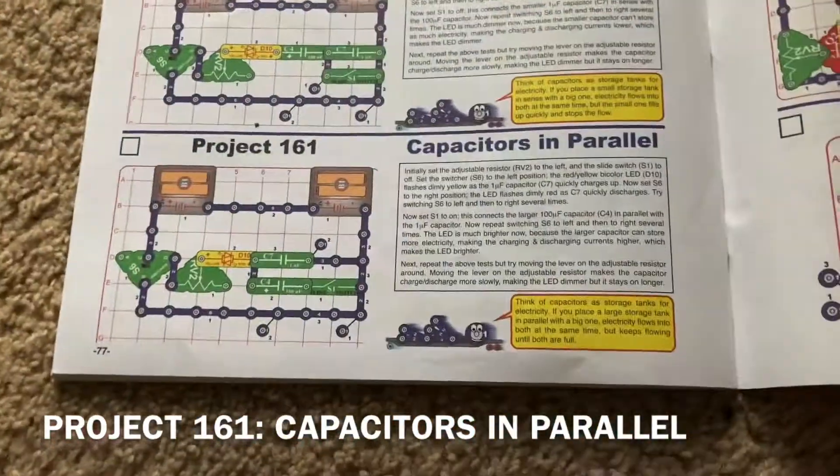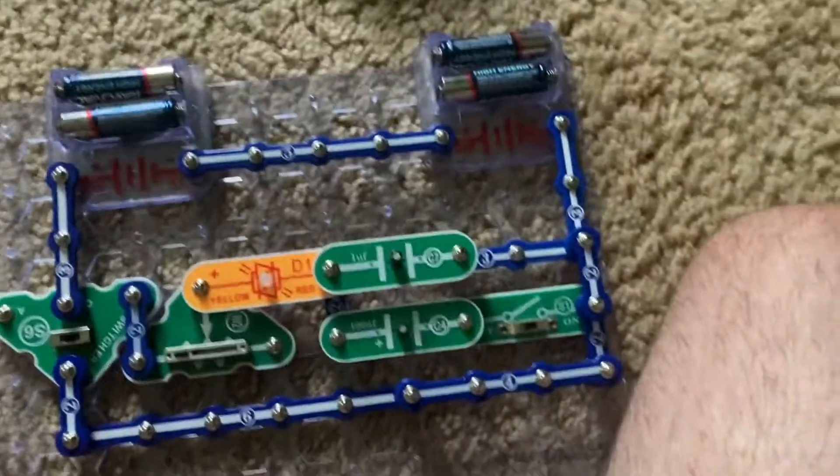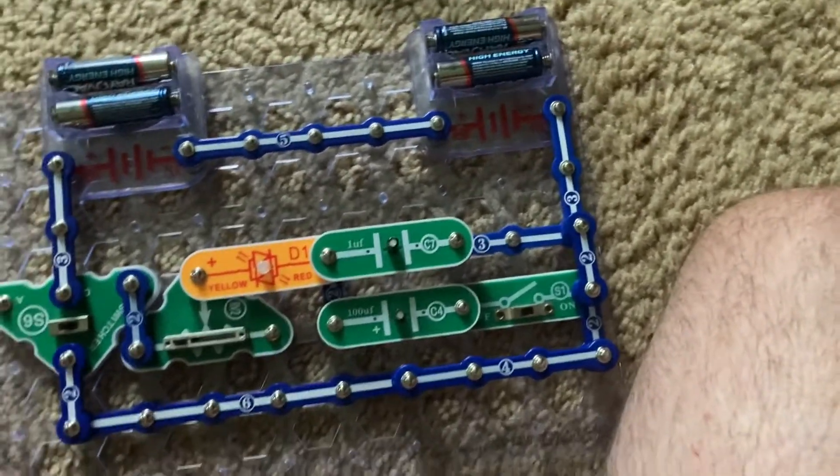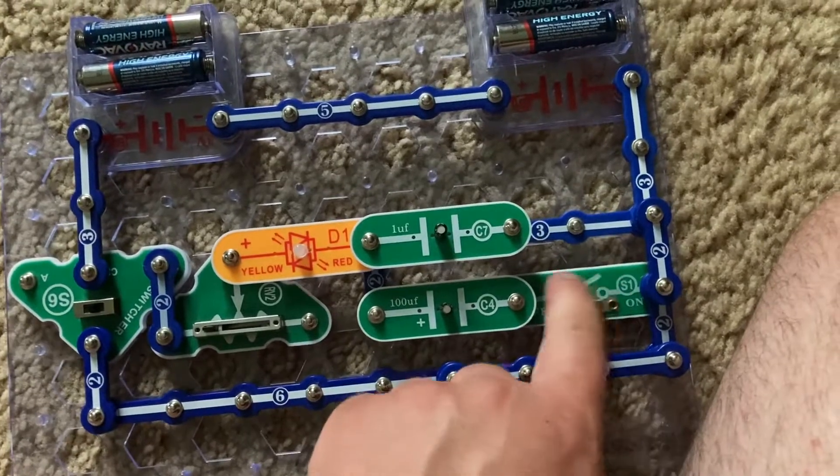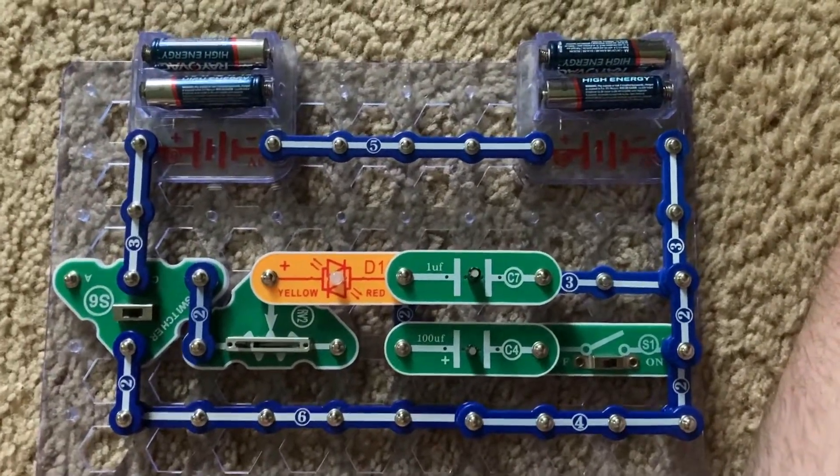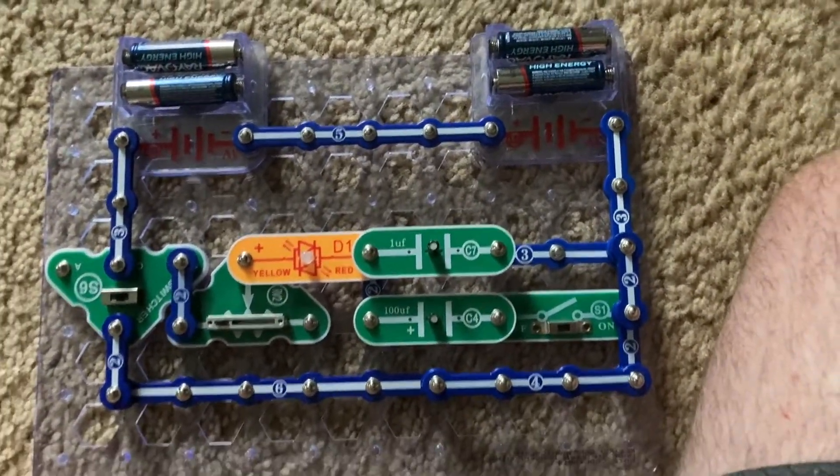Project 161 is capacitors in parallel. As you can see, the circuit looks a little different than in the previous project. Now the capacitors are connected in parallel. Right now I have the slide switch off and therefore only the C7 capacitor is used in the circuit.